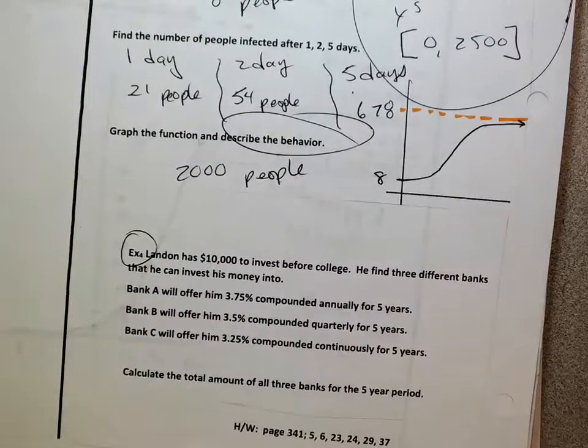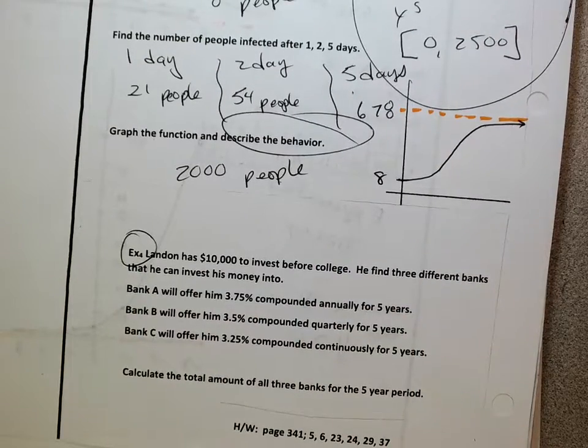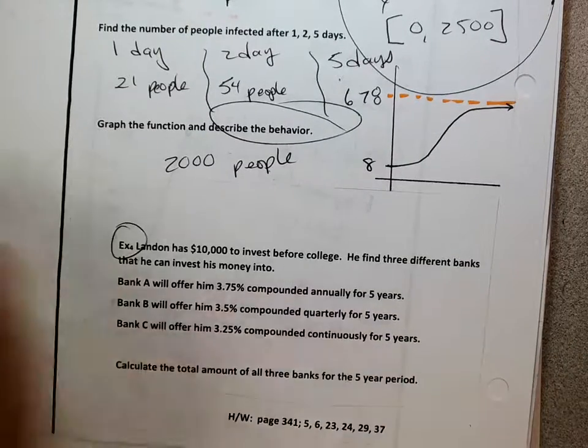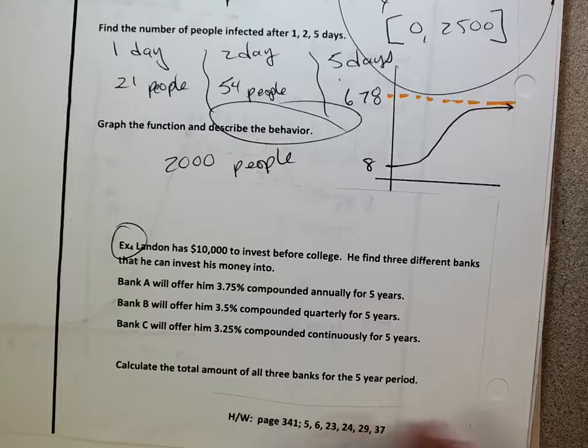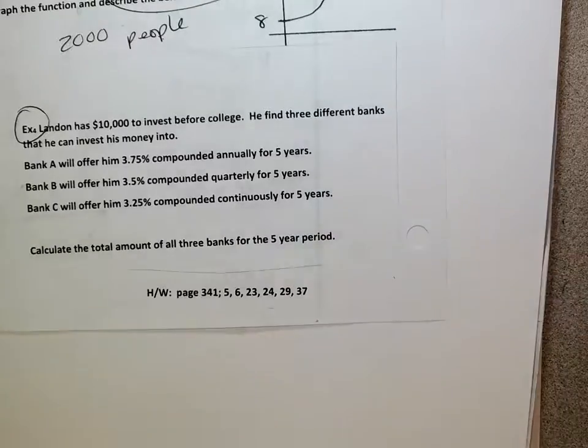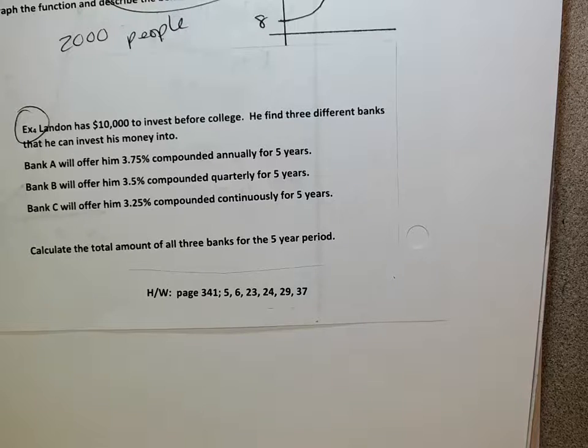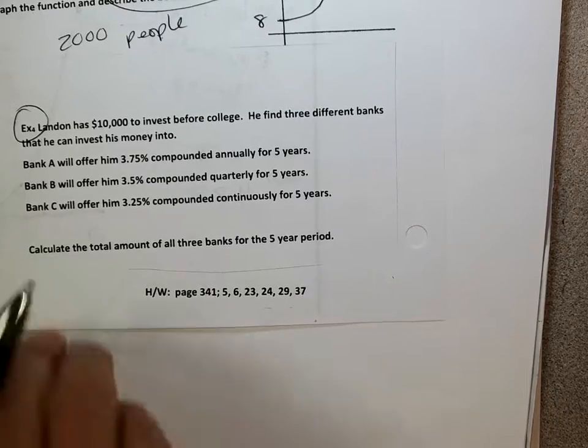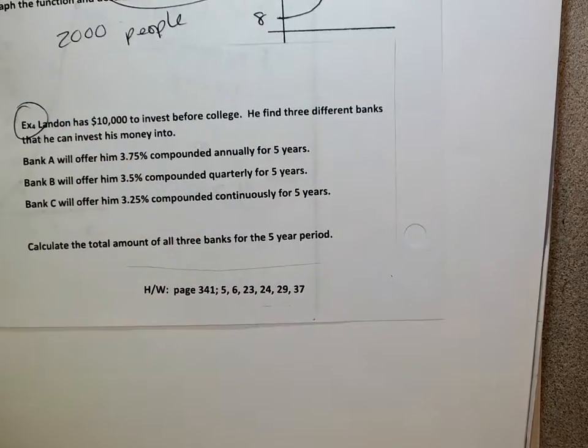All right. Now, we will finish these up real quick tomorrow. This will be our warm up. I'll show you how to do this. But as far as homework, I'm going to change this. I will change this real quick. I think the bell rings in about two minutes. So, let's give it to 341.